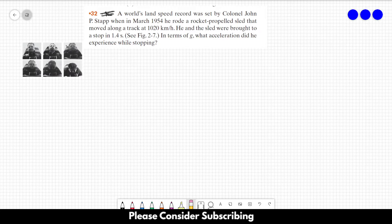Number 32: A world's land speed record was set by Colonel John P. Stapp when in March 1954 he rode a rocket propelled sled that moved along a track at 1020 km per hour. He and the sled were brought to a stop in 1.4 seconds.